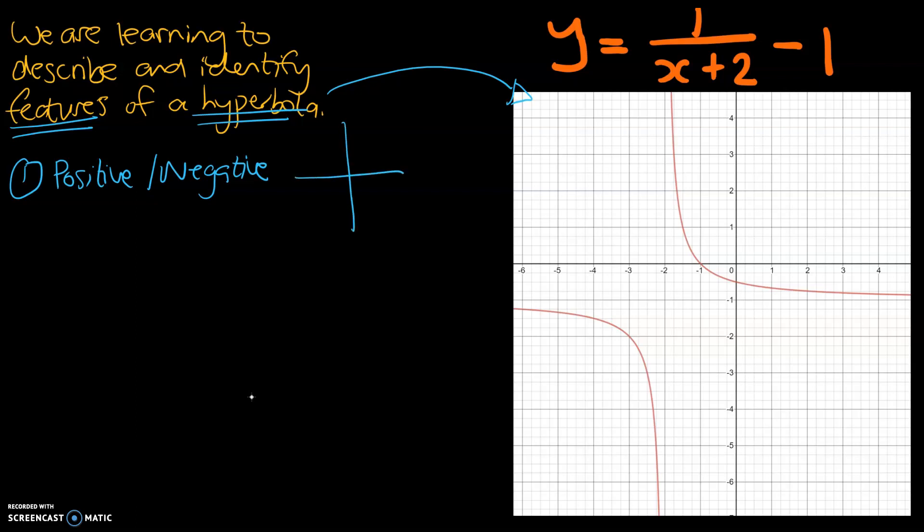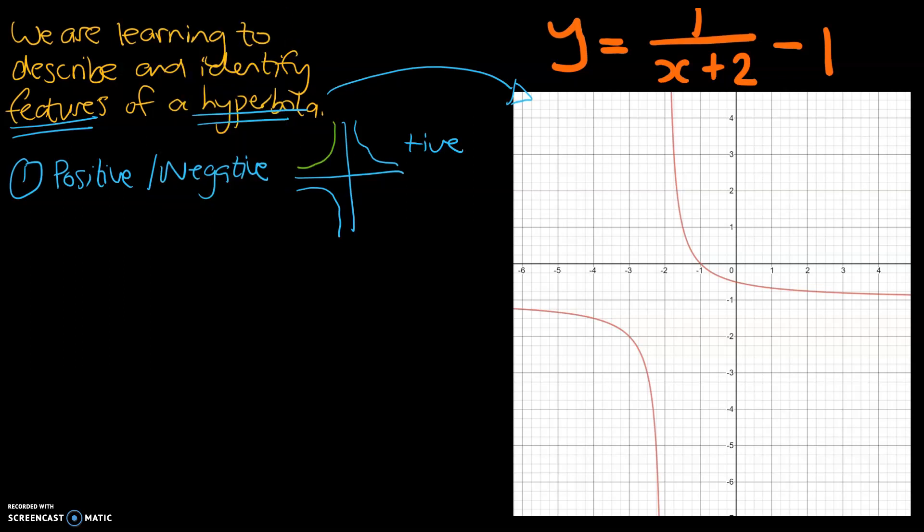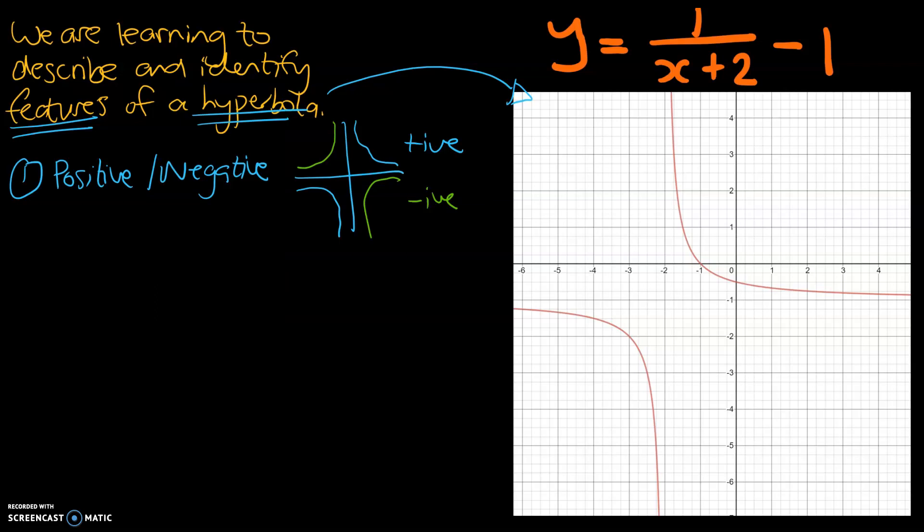So the first feature we could look at is whether or not it's a positive or a negative hyperbole. This is similar to parabolas and cubics - they can be positive, they can be negative, and hyperboles can be the same. If your hyperbole is in the top right and bottom left, that is an example of a positive cubic. And if it's been flipped around, if it's top left and bottom right, that is an example of a negative hyperbole.